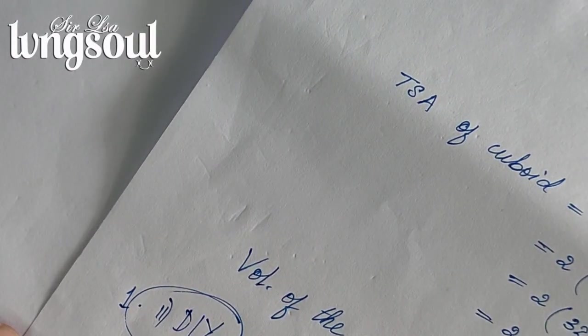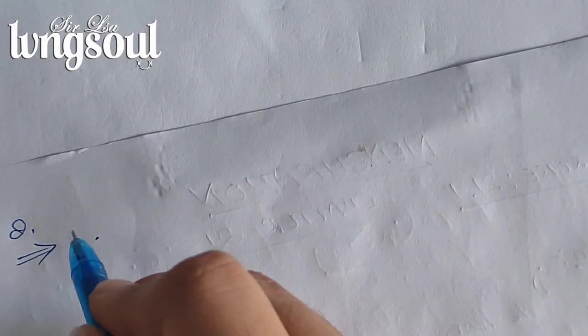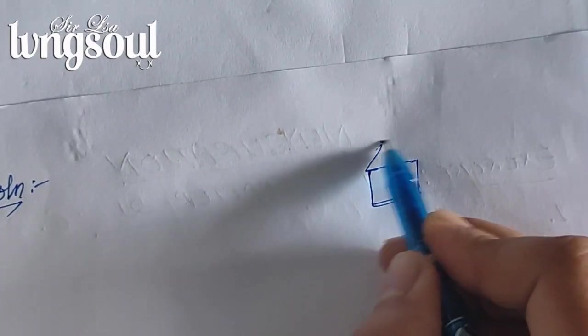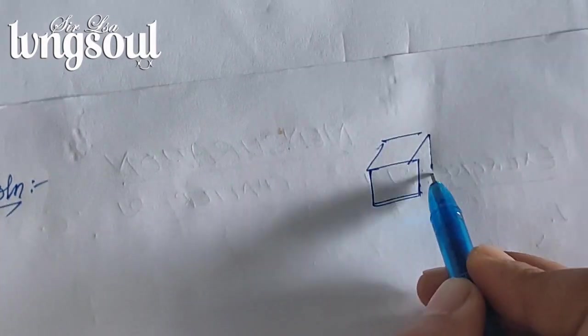Question number two: the cube. A cube is a three-dimensional shape where all sides are equal. It is a square in three dimensions.